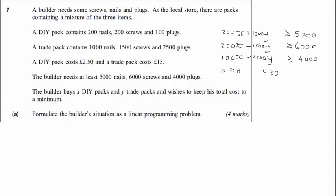The other thing needed to fully formulate the situation is the objective: keeping costs to a minimum. A DIY pack costs £2.50, so the total spent on DIY packs is £2.50 times X. The total spent on trade packs is £15 times Y. Adding these gives our total cost, and that is what we are trying to minimise. That's our objective function, and with that, we've finished formulating the linear programming problem.